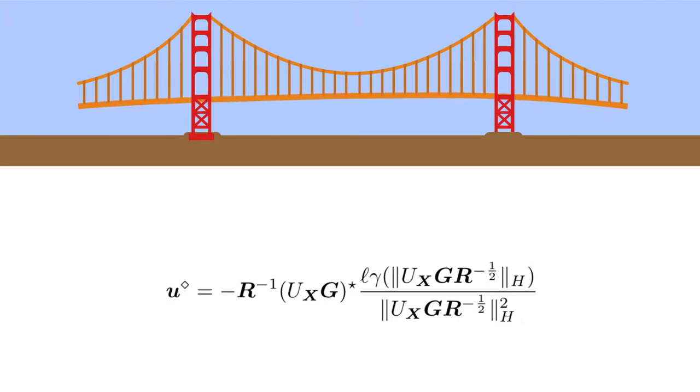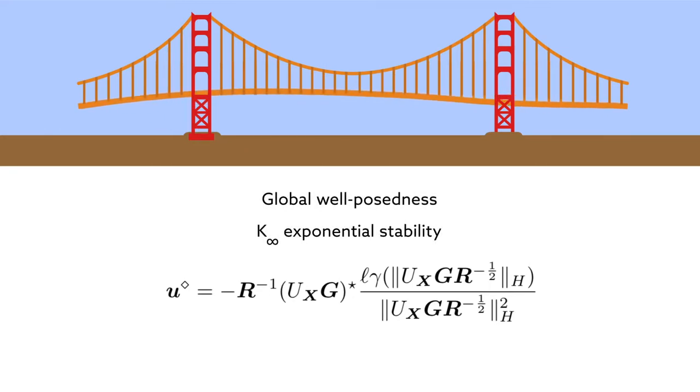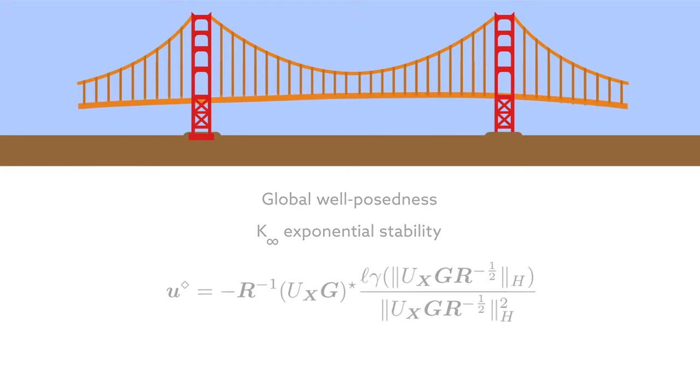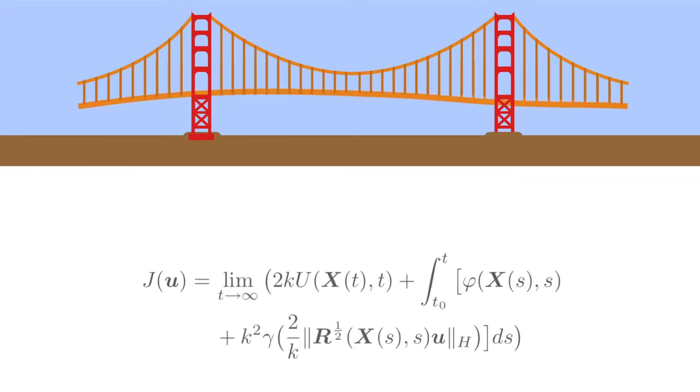The optimal control design possesses two highly attractive features. First, it ensures both global well-posedness and global practical k-infinity exponential stability of the closed-loop system. And second, it minimizes a cost functional that appropriately penalizes both state and control, such that it is positive definite in the state and control,